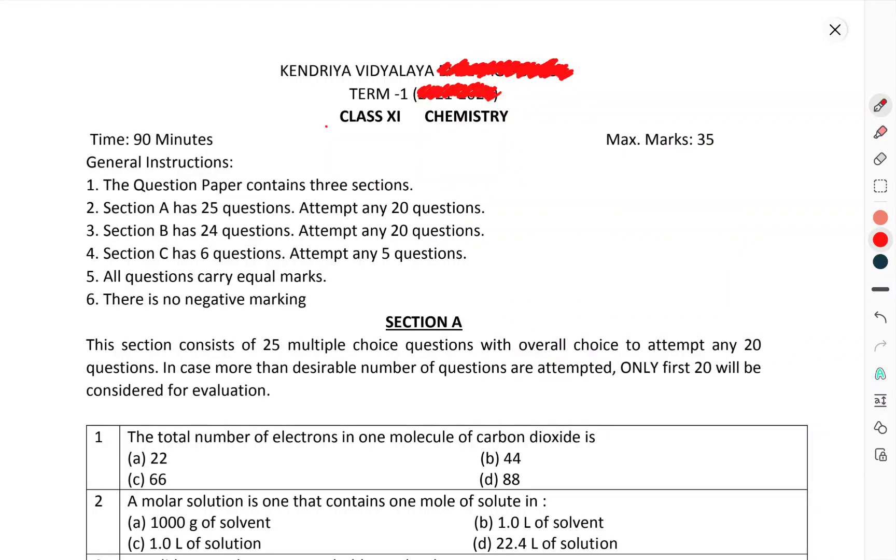Now we will talk about Class 11th Chemistry term 1. Term 1 means this is the midterm, or you can say this is a question paper. Let's start. First of all, one and a half hour question paper, max marks is 35.